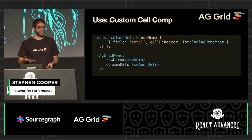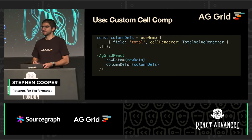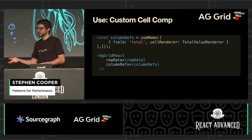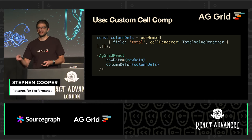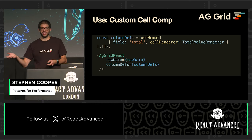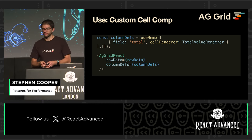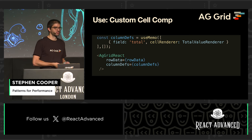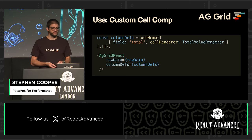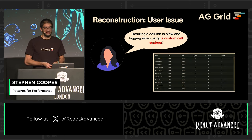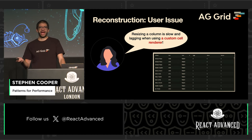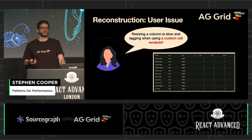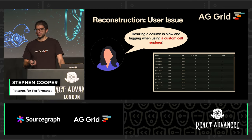To use this cell renderer, they pass it to the grid. They'll define it on their column saying, render this with my renderer, and pass it to the AG Grid component. We'll come back to this and think about how we're going to resolve this issue, because we haven't noticed it yet.